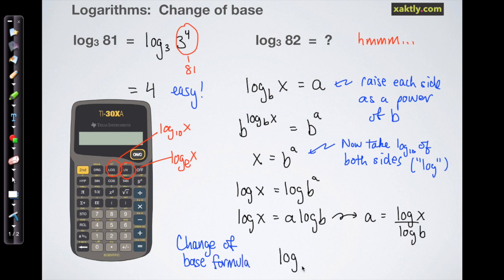So the log with some base B of anything is just a common log of that thing, log of X, over the common log of the old base, and there's nothing special about the common log. We could have used the natural log as well, so those both work.